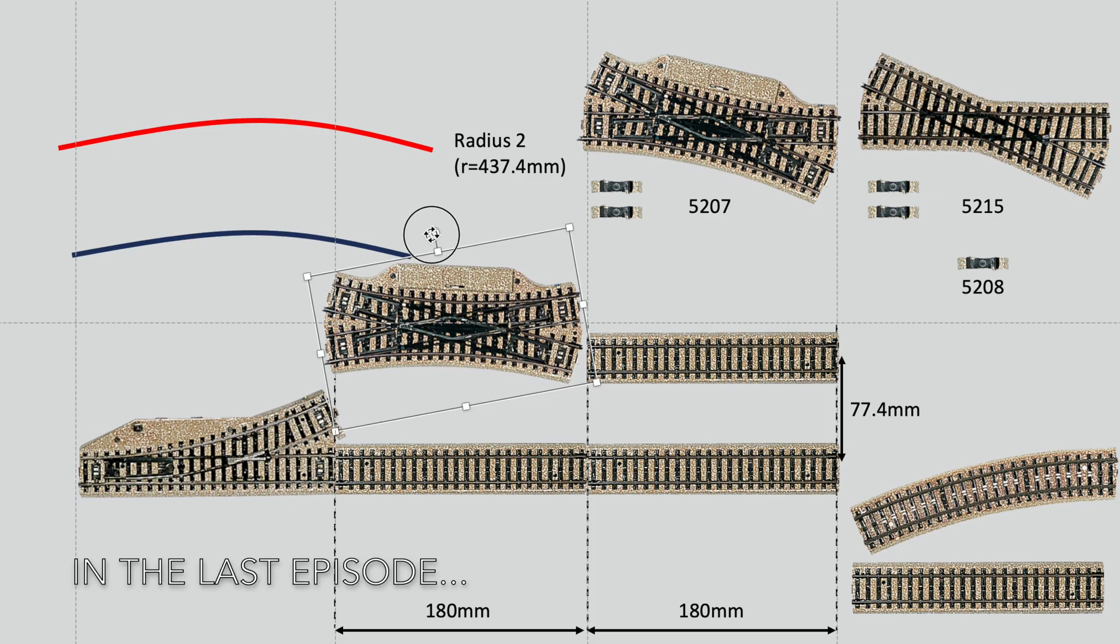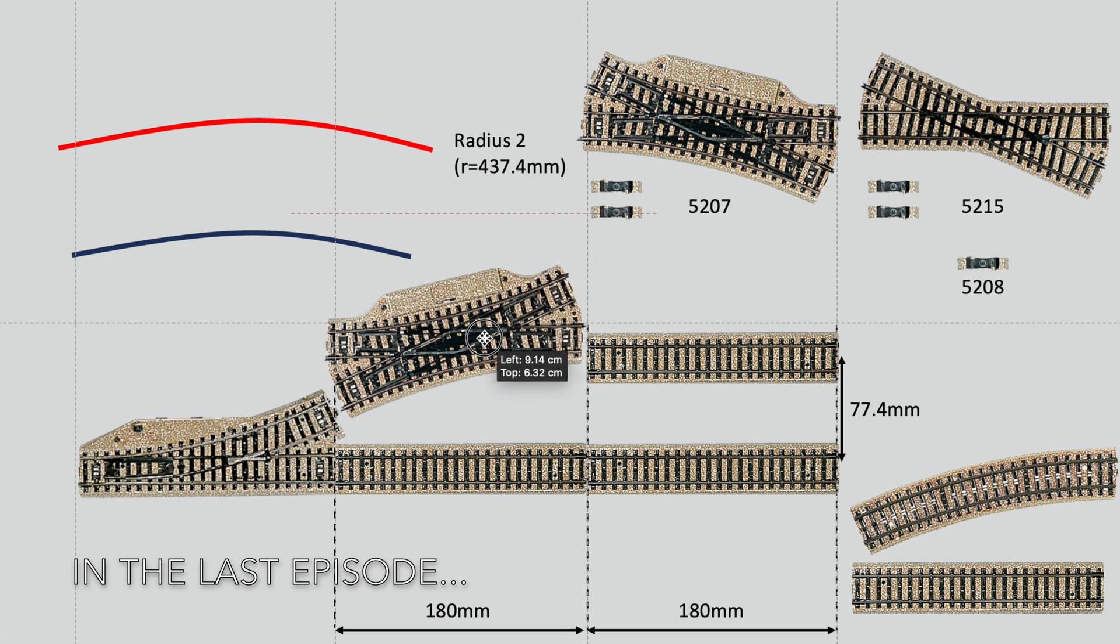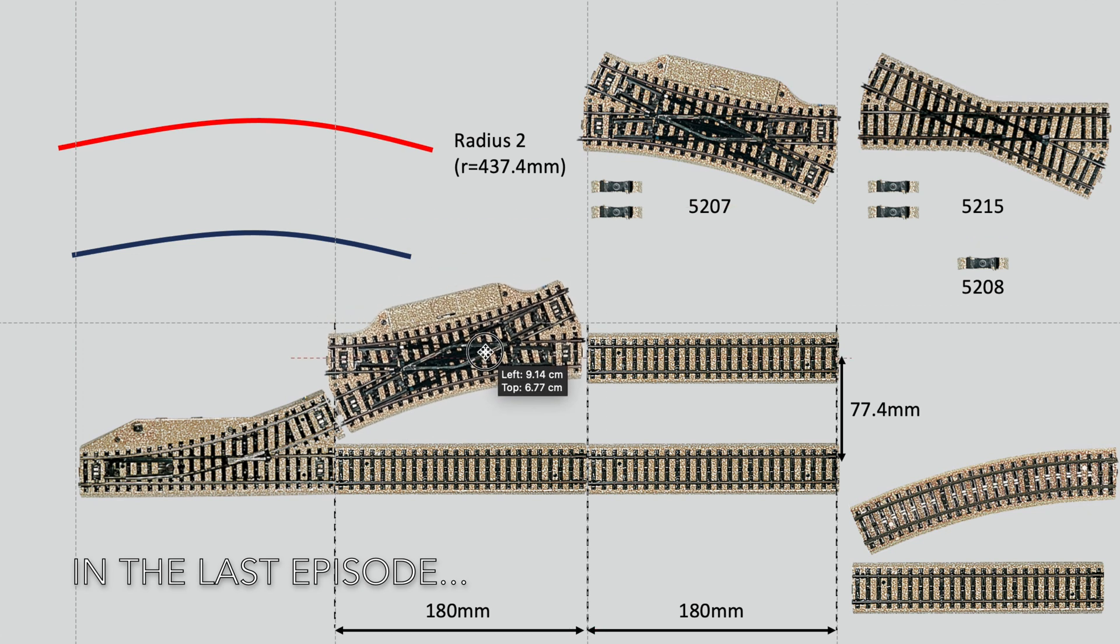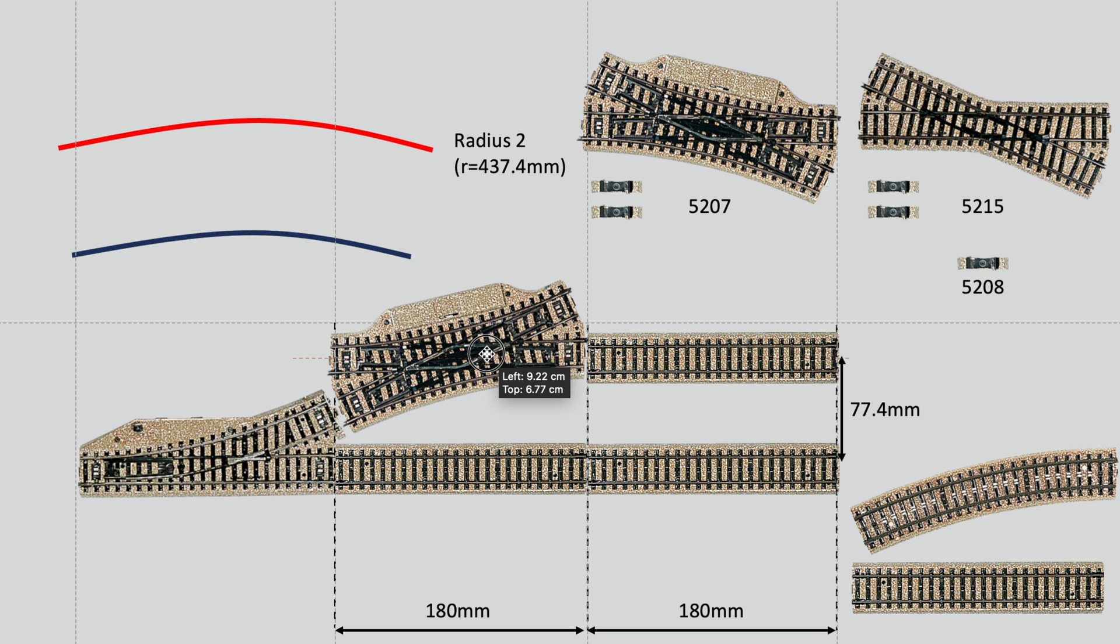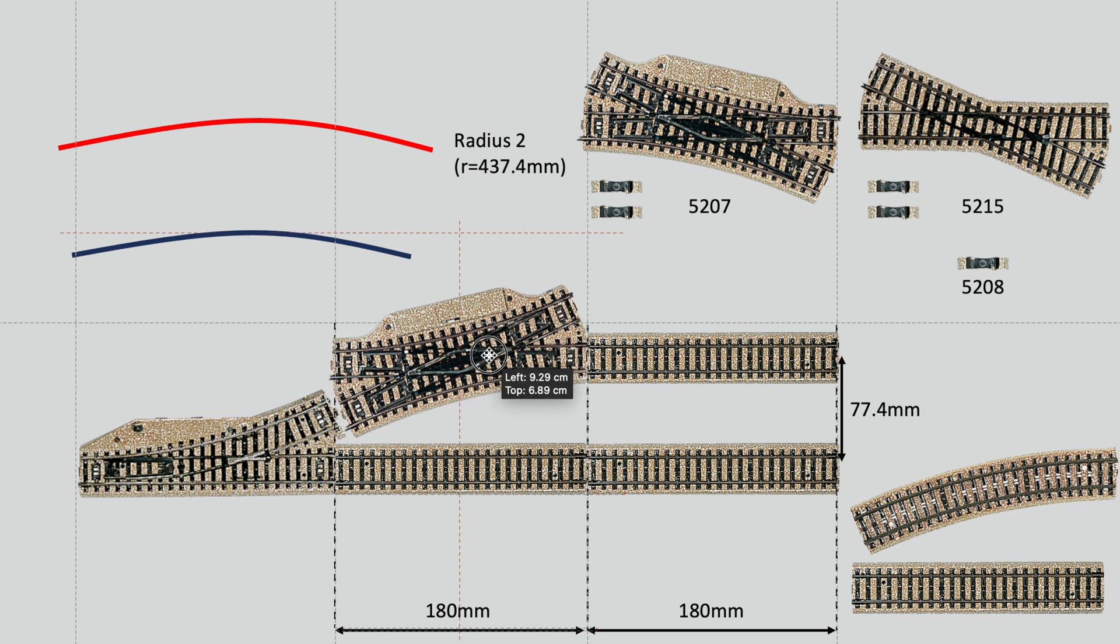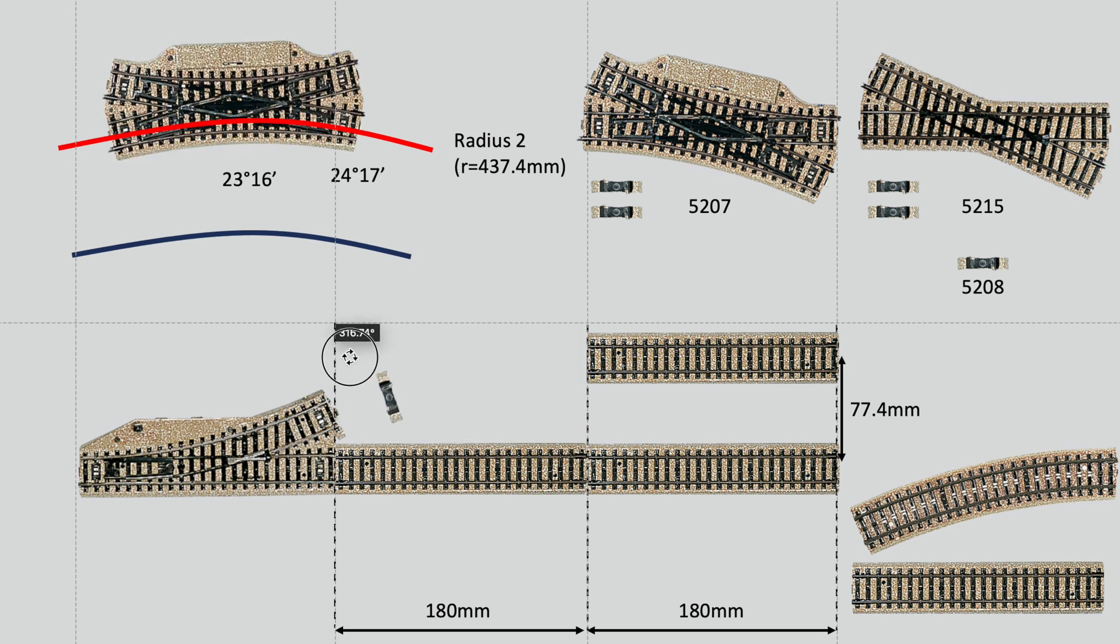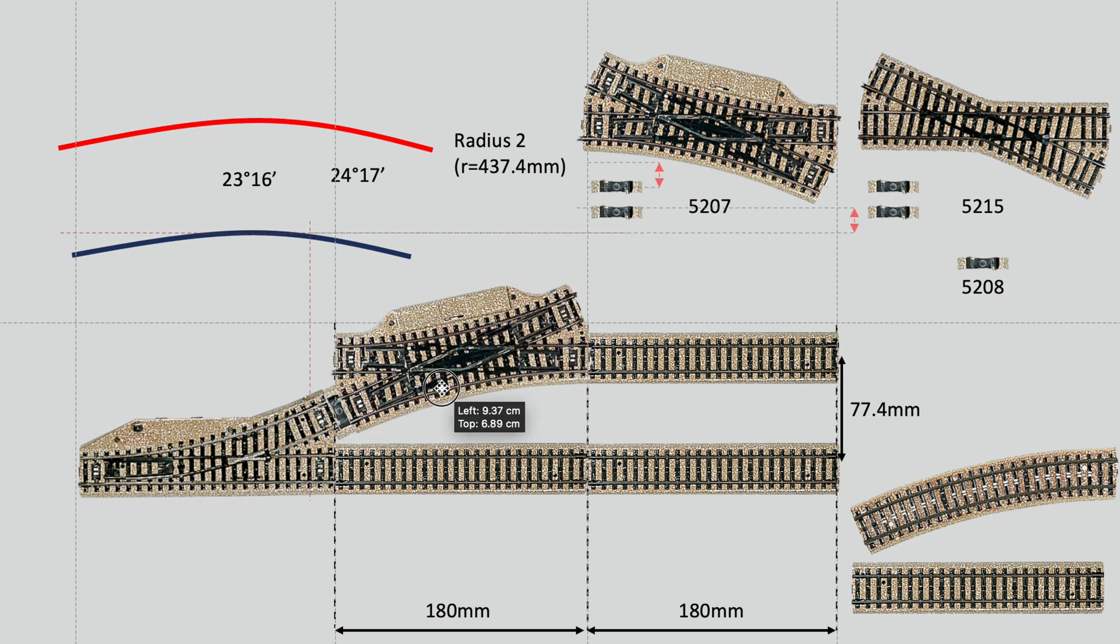In the Märklin M-track system there are two crossings designed to be used with radius 2 turnouts to create parallel track combinations. The crossings are symmetrical with both straights measuring a standard straight length of 180 millimeters. This length wouldn't be enough to join the diagonals with a turnout on a parallel track, so a make-up bit was designed for this purpose. The crossings were sold with a pair of these.